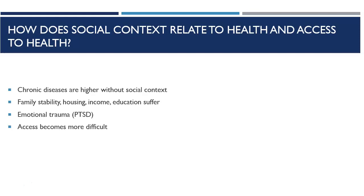You need to think about social context, though it's very difficult to separate it from the other three social determinants of health. Think about how social context affects your women's health issue. Does it increase the risk for it? Does it decrease the risk for proper care? What happens when a woman has social context — or when she does not have a strong social context — in relationship to your women's health issue?